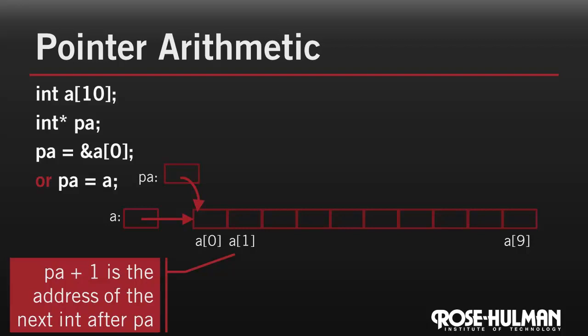Now it works for other types as well. If we had an array of doubles, which are twice as big on many systems, and a pointer to a double, then pa plus 1 would give the address of the next double in that array. Or what if we had an array of structs, where the size of the struct can be even bigger, depending on what it was declared to hold, and we had a pointer to a struct. In that case, pa plus 1 would give the address of the next struct in the array. This ability to just use the integer 1 to move ahead in memory by the size of whatever data type being used is called pointer arithmetic.